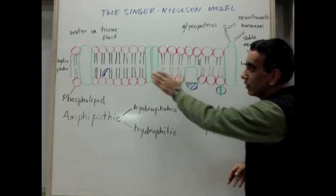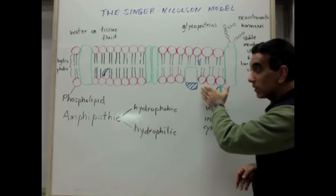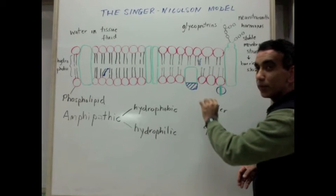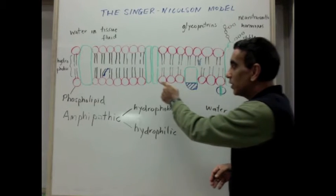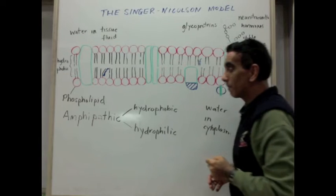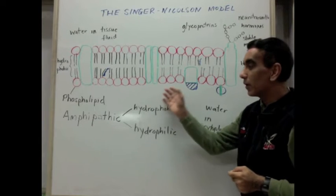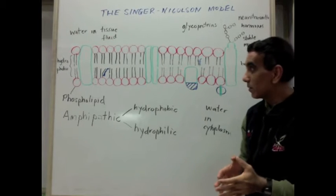Then several proteins run through the membrane in some cases and partially through the membrane in other cases. Some of these proteins have channels. These proteins are associated with a range of functions including active and passive transport.